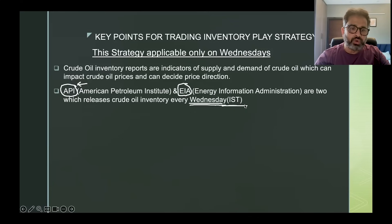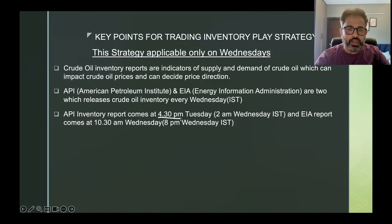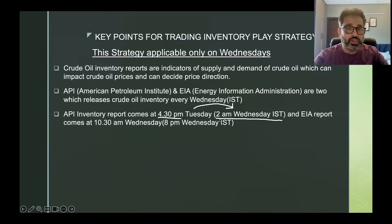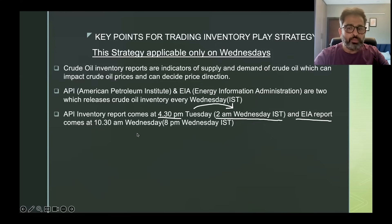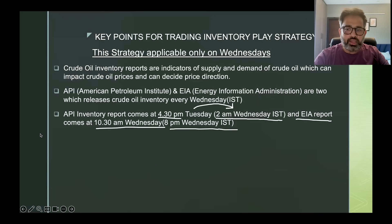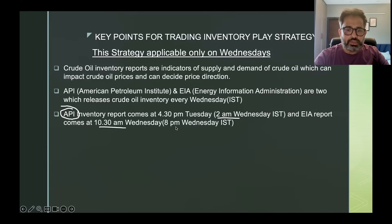EIA is released on Wednesday in both the US and India. API inventory report comes at 4:30 PM Tuesday US time, which is 2 AM Wednesday Indian Standard Time. At 2 AM our market is closed — the crude oil market is open only from 9 AM to 11:30 PM Indian time. EIA report comes at 10:30 AM Wednesday US time, which is 8 PM Wednesday Indian Standard Time, when our market is also open.